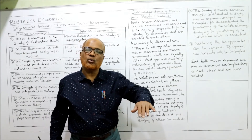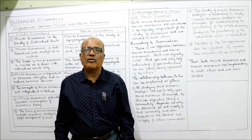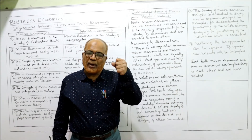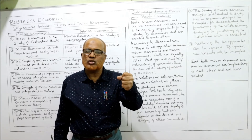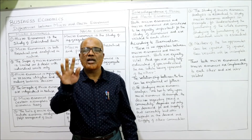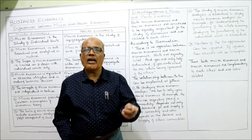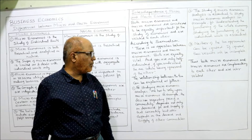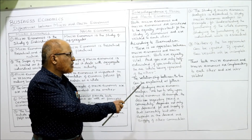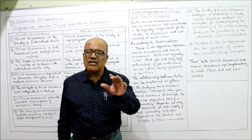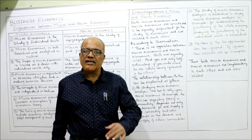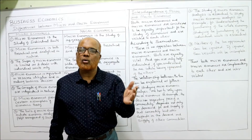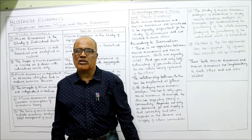If you want to be 100% educated in economics, you must study both. You must have knowledge about microeconomics as well as macroeconomics. The relationship between the two can be explained through three points showing how both are interdependent on each other.